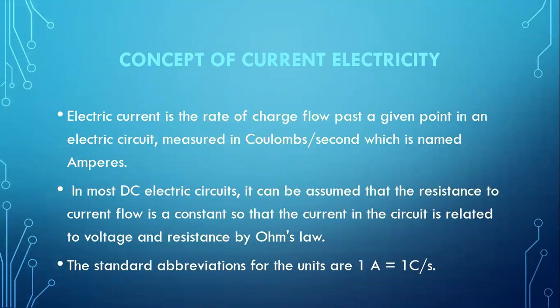Electric current is the rate of charge flow past a given point in an electric circuit, measured in coulombs per second, which is named amperes. In most DC electric circuits, it can be assumed that the resistance to current flow is constant, so that the current in the circuit is related to voltage and resistance by Ohm's law, which we will see in our next session.